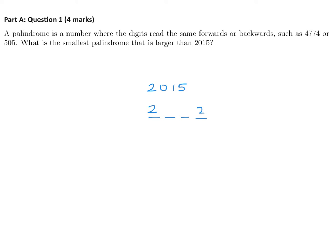And then we've got this 0 here. So if I put a 0 here, the 0 would have to be there also to make it a palindrome. But this number, 2002, is not larger than 2015. So even though that's a palindrome, we can't use that.